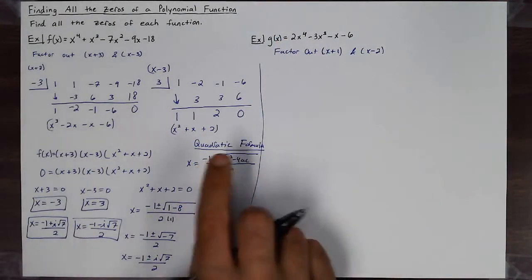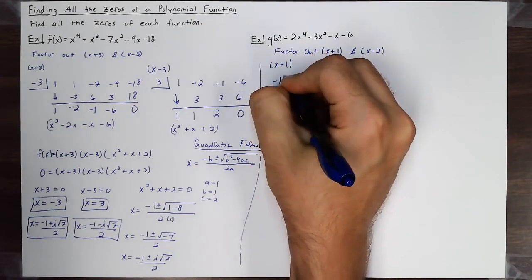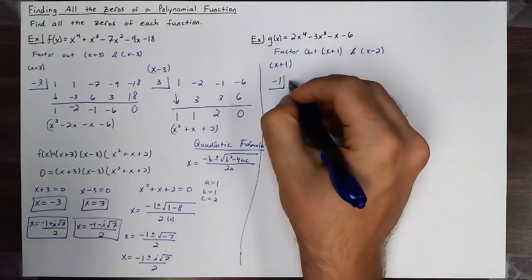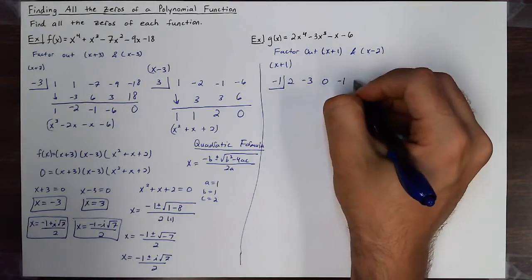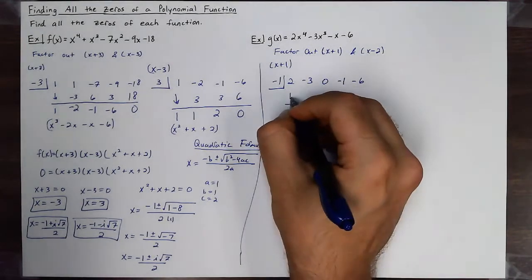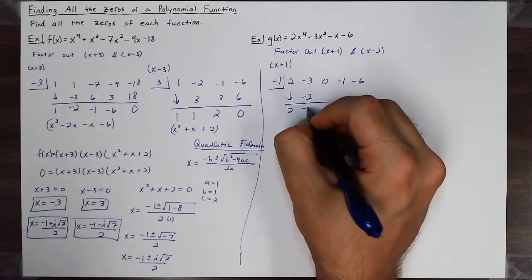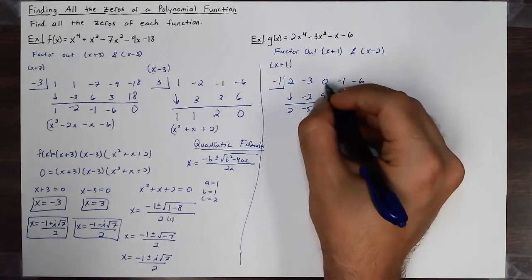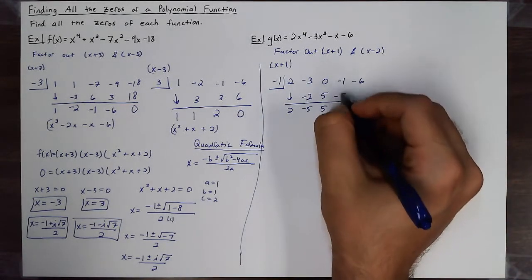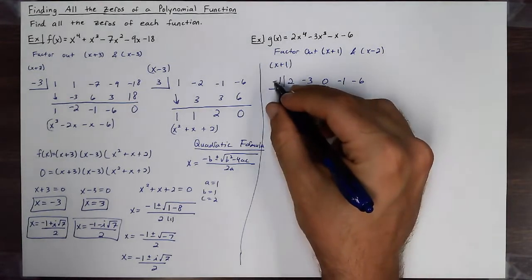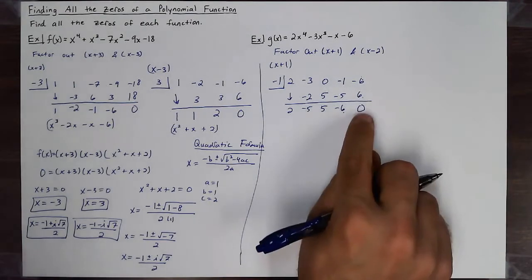I'm going to use synthetic division again. For (x+1), I'll put negative 1 in the box and write my coefficients: 2, -3, then there's no x² term so I put a 0 in its place, then -1, -6. Bring down the 2. -1 times 2 is -2; -3 plus -2 is -5. -1 times -5 is positive 5; 0 plus 5 is 5. -1 times 5 is -5; -1 plus -5 is -6. -1 times -6 is positive 6; -6 plus 6 is 0, remainder of zero.